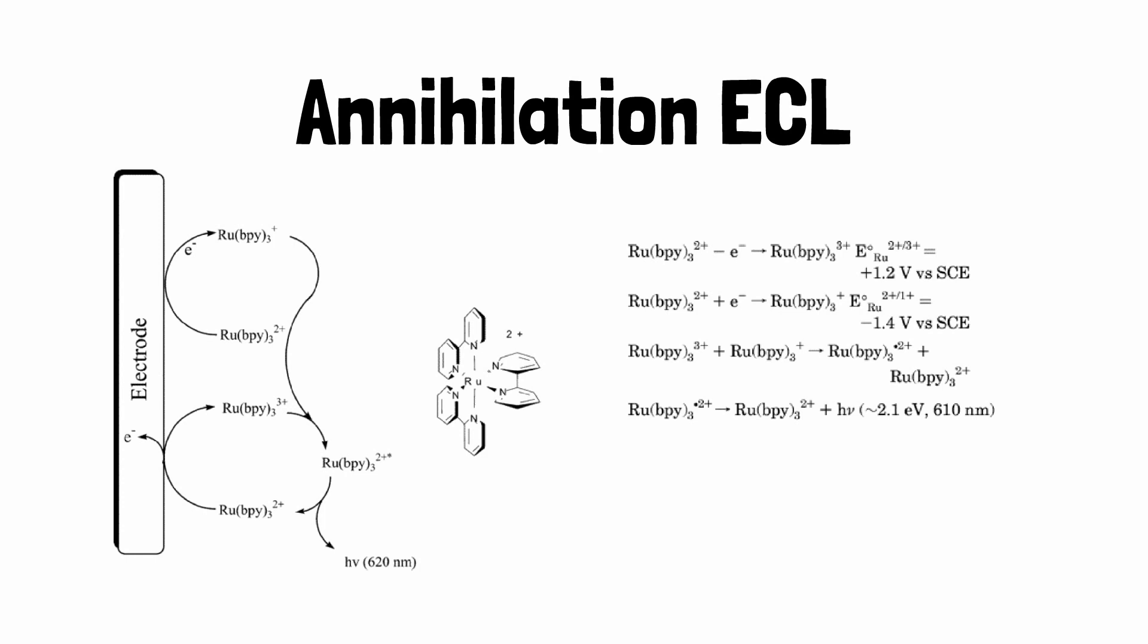ECL was generated by alternate pulsing of an electrode potential to form oxidized Ru(bpy)3^3+ and reduced Ru(bpy)3^+. Ru(bpy)3^2+* represents the excited molecule that emits light, and hν is a photon of light. The excited state formed in this ECL reaction is similar to that formed during photoexcitation.